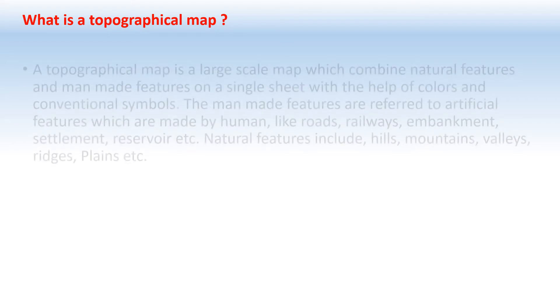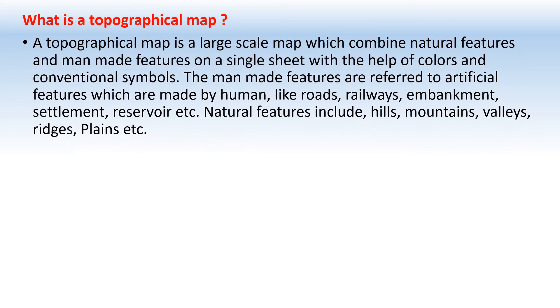What is a topographical map? A topographical map is a large-scale map — this is an important point that should be in your answer — which combines natural features and man-made features on a single sheet with the help of colors and conventional symbols.